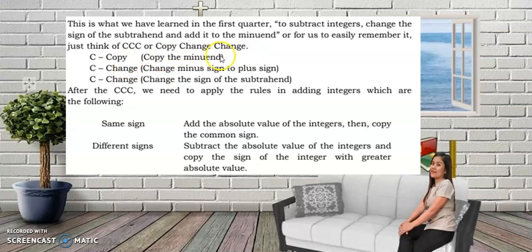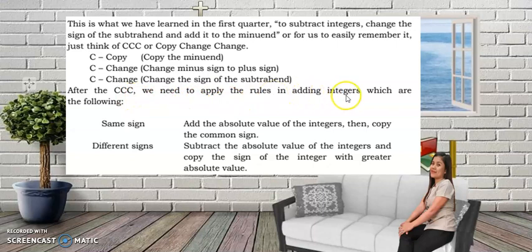So: copy the minuend, change the minus sign to a plus sign, change the sign of the subtrahend. After the CCC, we need to apply the rules in adding integers.